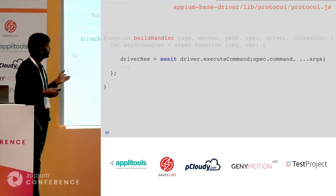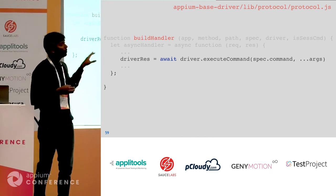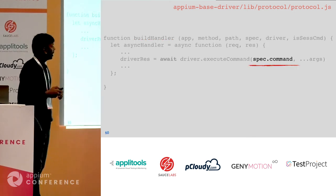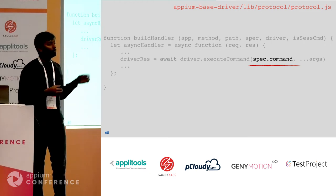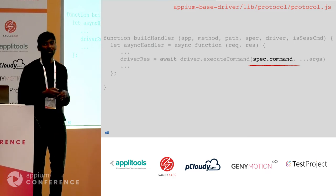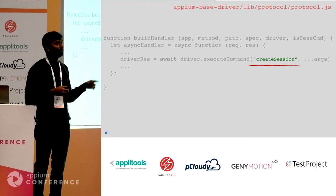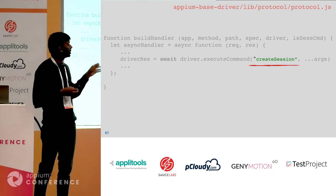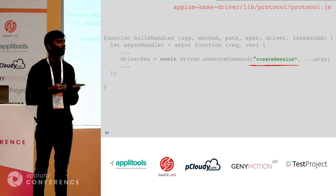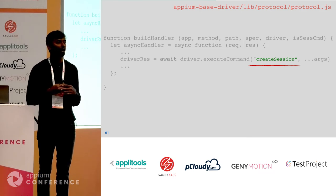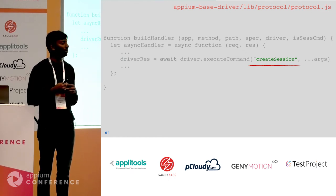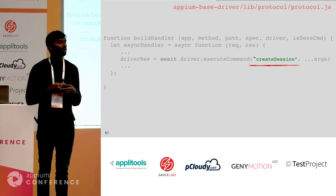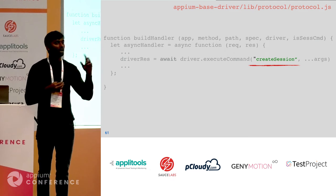The create session route is registered during Appium server start — it has an API path, a POST method, and a command called 'createSession.' The Appium server invokes the create session function using a spec command that maps to the route command. This invokes create session in the appropriate driver — since we specified UiAutomator2 in capabilities, it gets invoked inside the UiAutomator2 driver. The create session function should be available in every driver module, whether UiAutomator, Espresso, Selendroid, or Appium UiAutomator driver.